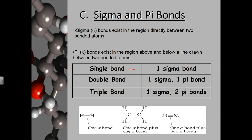The first bond that ever forms is always a sigma bond. A double bond consists of one sigma and one pi bond. A triple bond consists of one sigma and two pi bonds. In diatomic hydrogen H2, there is just a sigma bond. In a C=C double bond, one is sigma and one is pi; all C–H single bonds are sigma. In an N≡N triple bond, there is one sigma and two pi bonds.